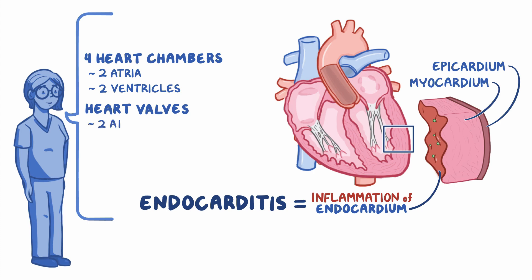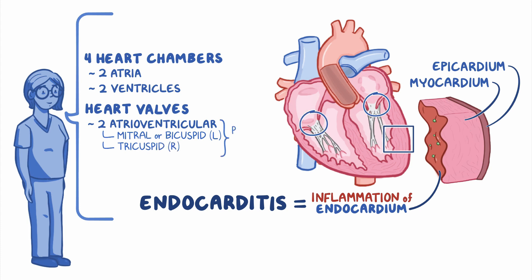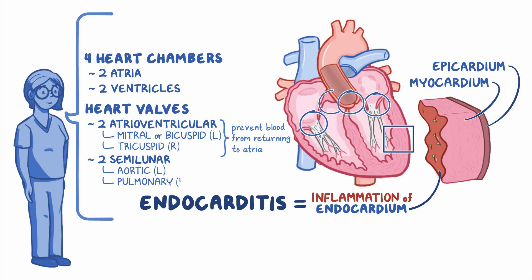First, there are two atrioventricular valves: the mitral or bicuspid valve on the left and the tricuspid valve on the right. The atrioventricular valves prevent blood from returning to the atria after filling the ventricles. Second, there are two semilunar valves called the aortic valve at the left and the pulmonary valve at the right. The semilunar valves prevent blood from returning to the ventricles after being pumped out.